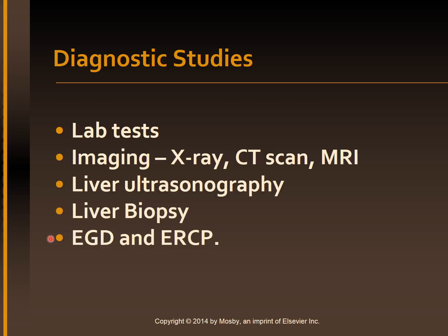Esophagogastroduodenoscopy (EGD) and endoscopic retrograde cholangiopancreatography (ERCP) may be done to visualize the GI tract and the biliary tract to detect the presence of bleeding and obstruction related to stones respectively. Bleeding points can be sclerosed and stones removed during these procedures.